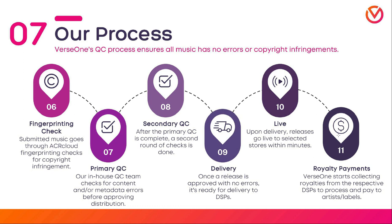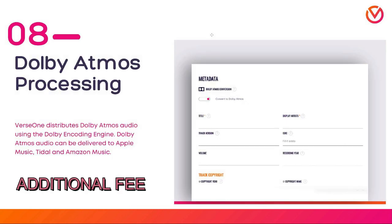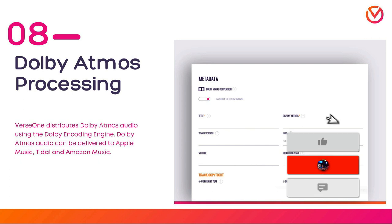A notable feature worth mentioning is their Dolby Atmos processing. What this does is take your stereo mix and convert it into Dolby Atmos. This is not as intricate as making a Dolby Atmos mix in the studio where you're placing specific sounds in specific areas of the sound field — it simply fills your stereo mix out to all areas in the Dolby Atmos spectrum. You just check a box and it will be released on platforms that support it, such as Apple Music, Tidal, and Amazon Music.